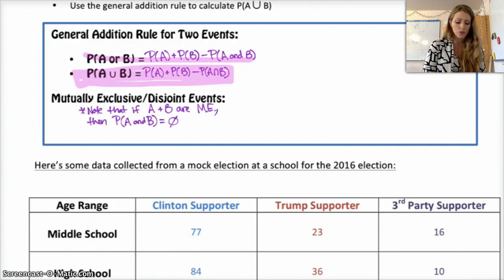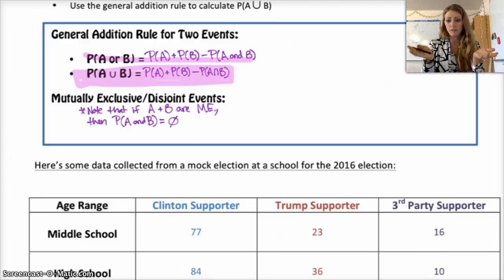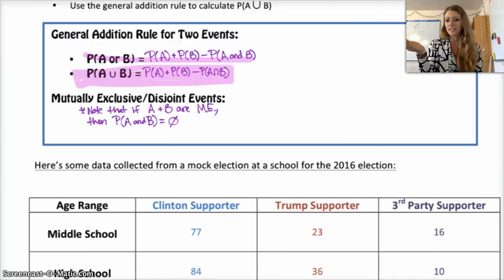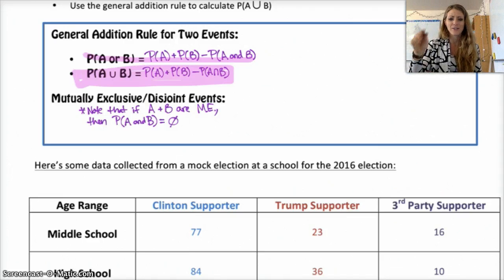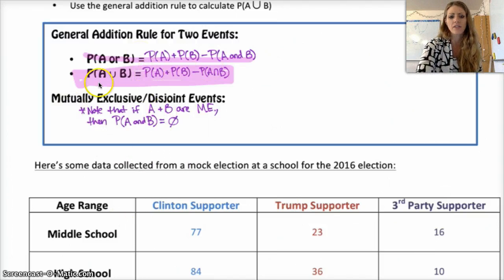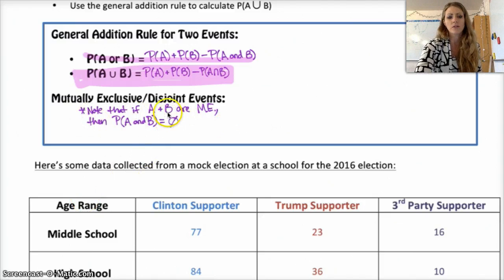You should know that the cup symbol means 'or,' and the cap symbol — which kind of looks like an N — means 'and.' The way I remember it is that 'and' has an N in it, so the cap looks like an N. Note that if A and B are mutually exclusive, then the probability of A and B equals zero, so you end up with just the probability of A plus the probability of B.